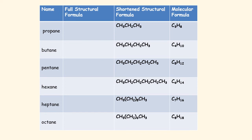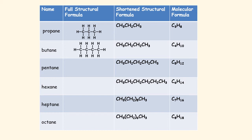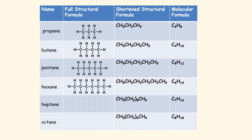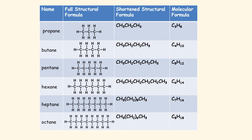As we keep going on, we've got propane, butane, pentane, hexane, heptane, and octane. Looking at the molecular formulas: propane is C₃H₈, butane is C₄H₁₀, pentane is C₅H₁₂, hexane is C₆H₁₄, heptane is C₇H₁₆, and octane is C₈H₁₈. So propane has a chain of three carbons with hydrogens filled in, butane four carbons, pentane five, hexane six, heptane seven, and octane eight.